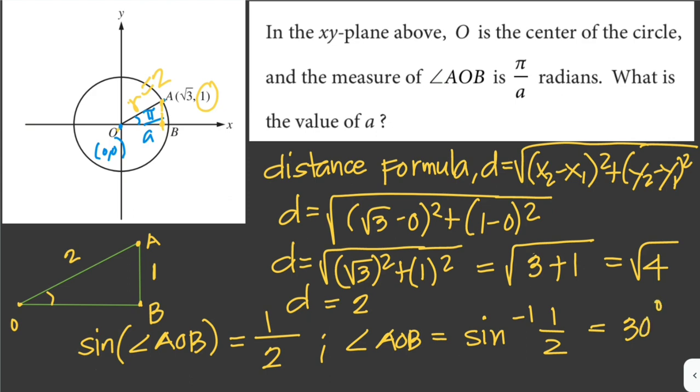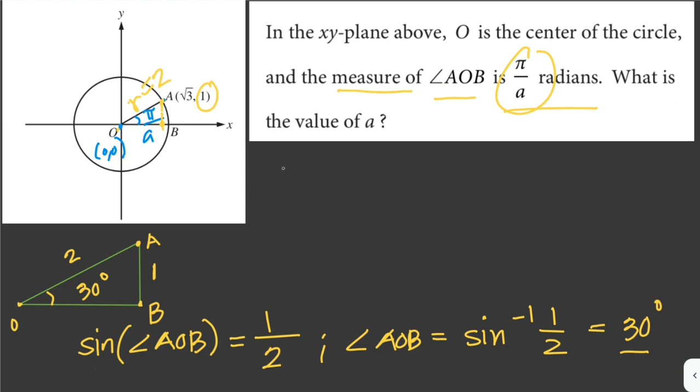Now we have the measure of angle AOB, which is equal to 30 degrees. And it says here that the measure of angle AOB is π over a radians. What is the value of a? So we just have to convert 30 degrees to radians and equate it to π over a. So we just multiply this by π over 180 degrees.